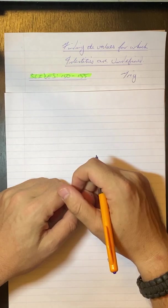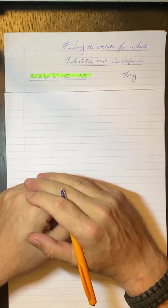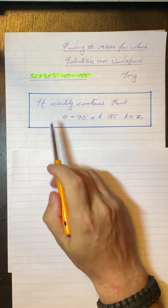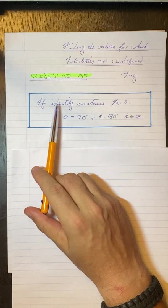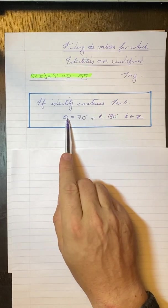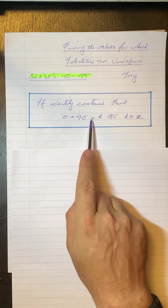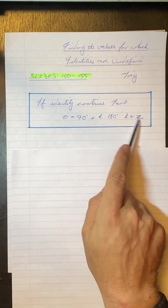The second thing I want you to know is if you have a tan theta in your identity, straight away I want you to write this: theta is equal to 90 plus k 180 where k is an element of the integers.